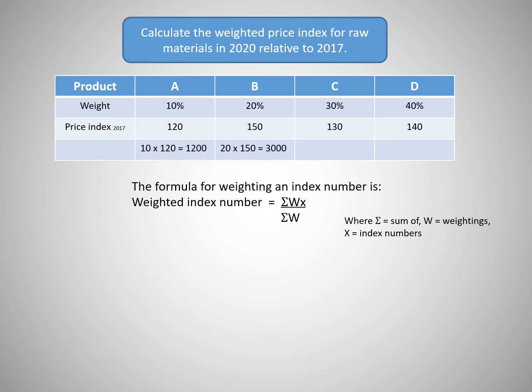C, 30 times 130 equals 3900. And D, 40 times 140 equals 5600.